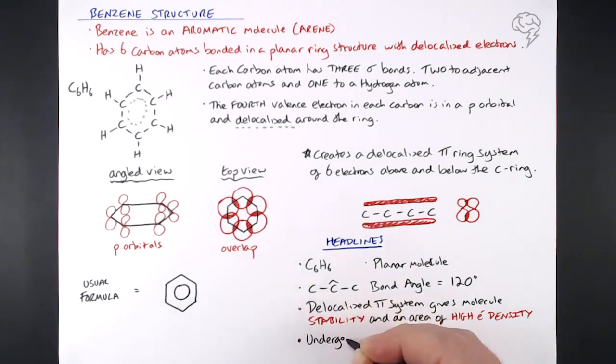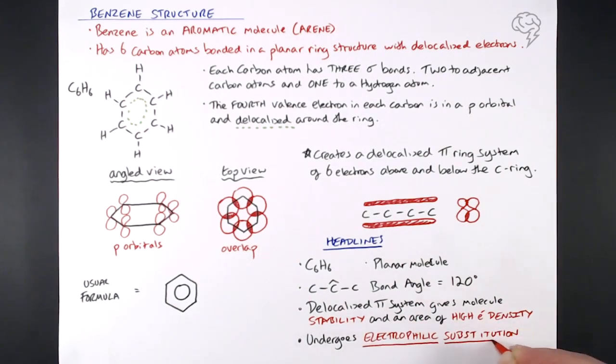So if it's very stable and things like electrophiles are attracted to it, it undergoes a particular type of reaction. Benzene undergoes electrophilic substitution. Now, why electrophilic substitution? Well, electrophilic, because of that high electron density in the benzene ring. Electrophiles, so things that are electron deficient, are going to be attracted to it.